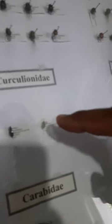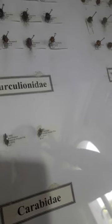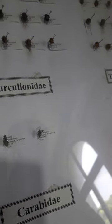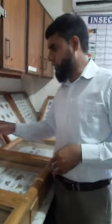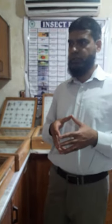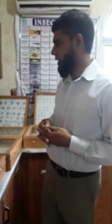Now we have another pest, that is the cotton weaver, which is also a minor pest of the cotton crop. This pest is actually a sucking pest which attacks on the cotton crop.